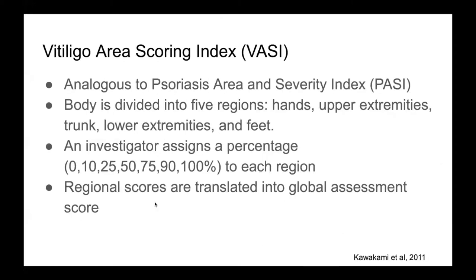The next tool is the vitiligo area scoring index. This tool divides the body into five regions, and for each region an investigator assigns an ordinal percentage score based on the pigmentation pattern of that region. These regional scores are then used to formulate a global assessment score of vitiligo involvement.